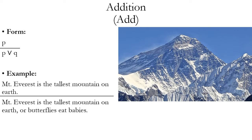Mount Everest is the tallest mountain on Earth. Therefore, Mount Everest is the tallest mountain on Earth or butterflies eat babies. This may seem really weird, and it is in this example. The disjunct we're adding — butterflies eat babies — is false, thankfully. But what makes this a valid inference is that the first disjunct is still true. So if you have some true proposition, you can create a disjunction and add whatever you want as the second disjunct.